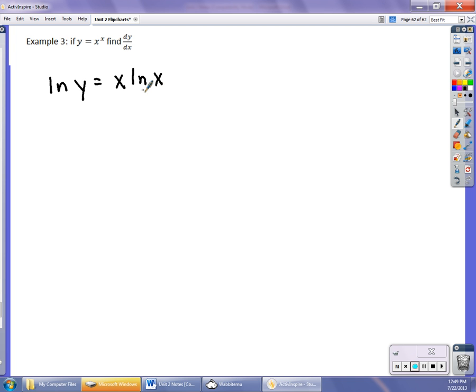Now take the derivative of both sides. When I take the derivative of this side, it's 1/y times dy/dx. That's implicit differentiation we did earlier. Equals, by product rule, ln(x) plus x times 1/x, or 1.